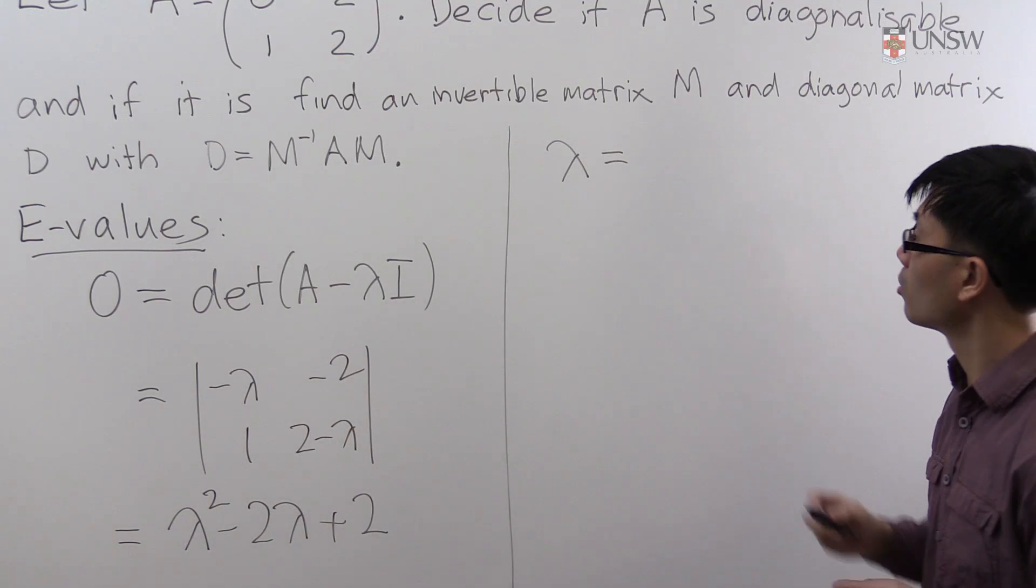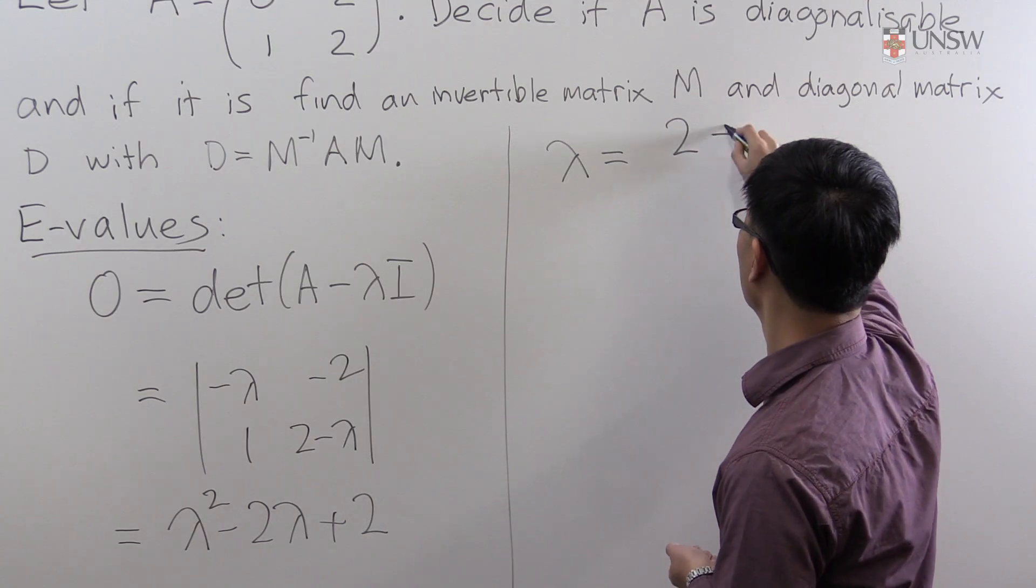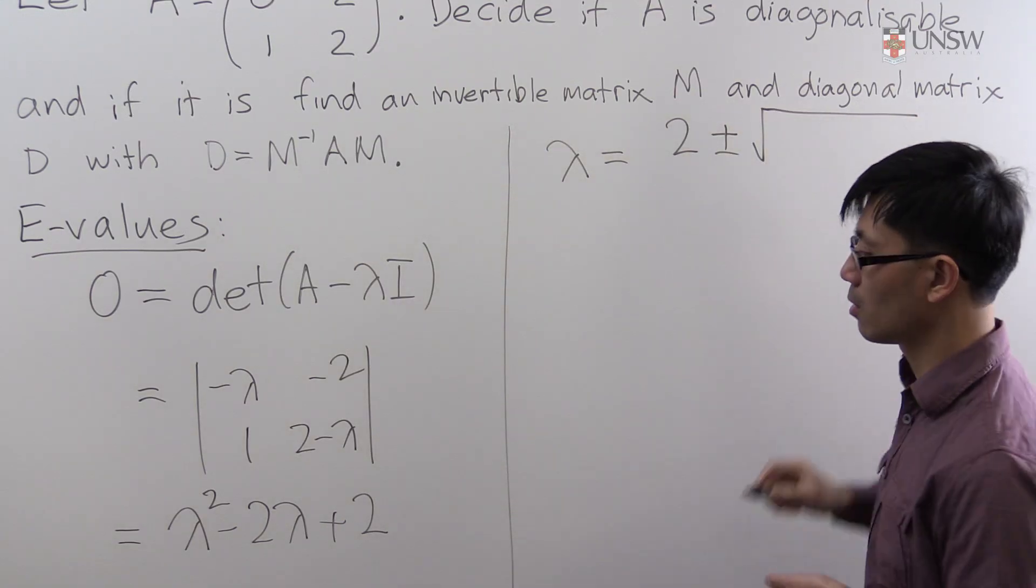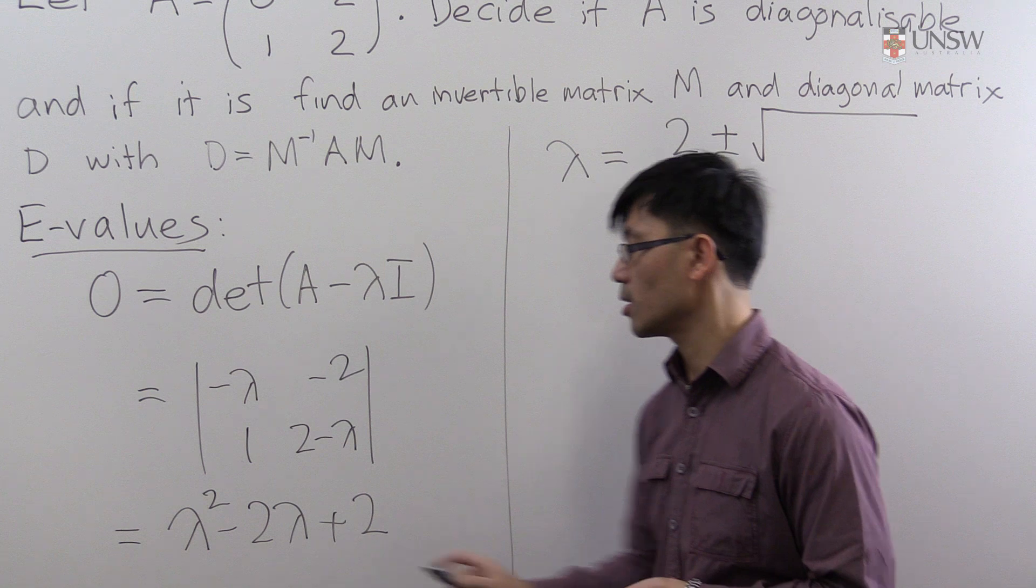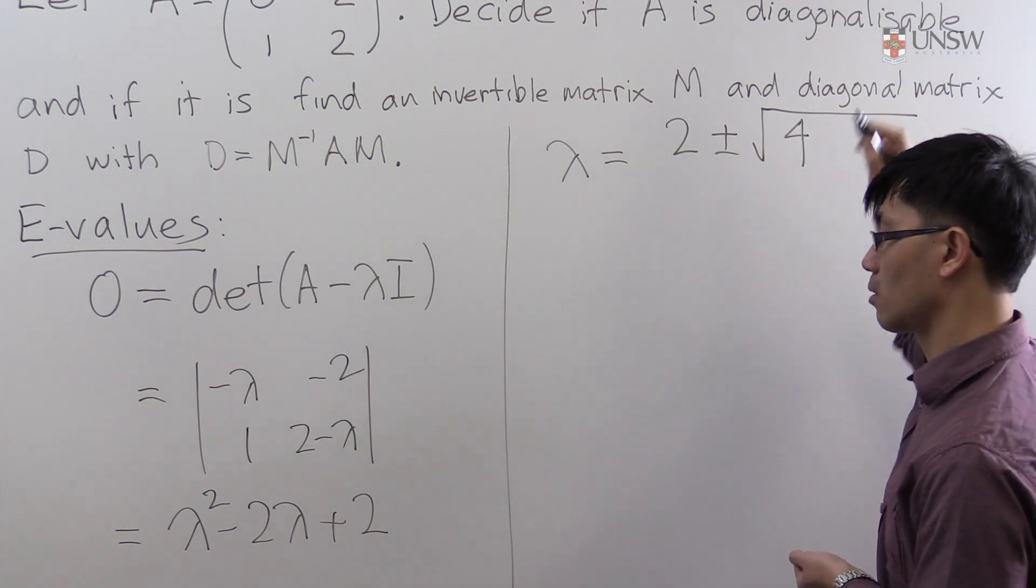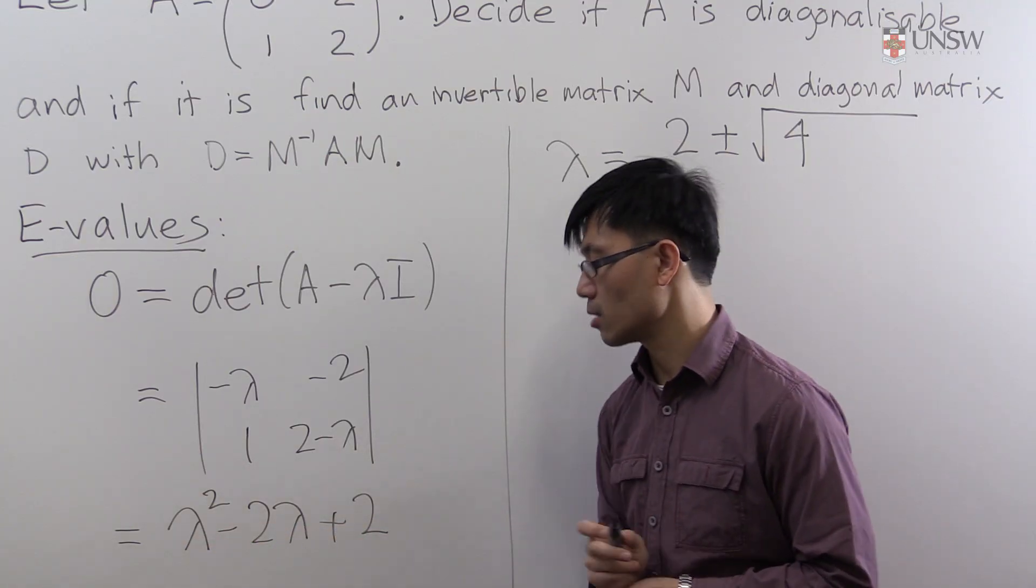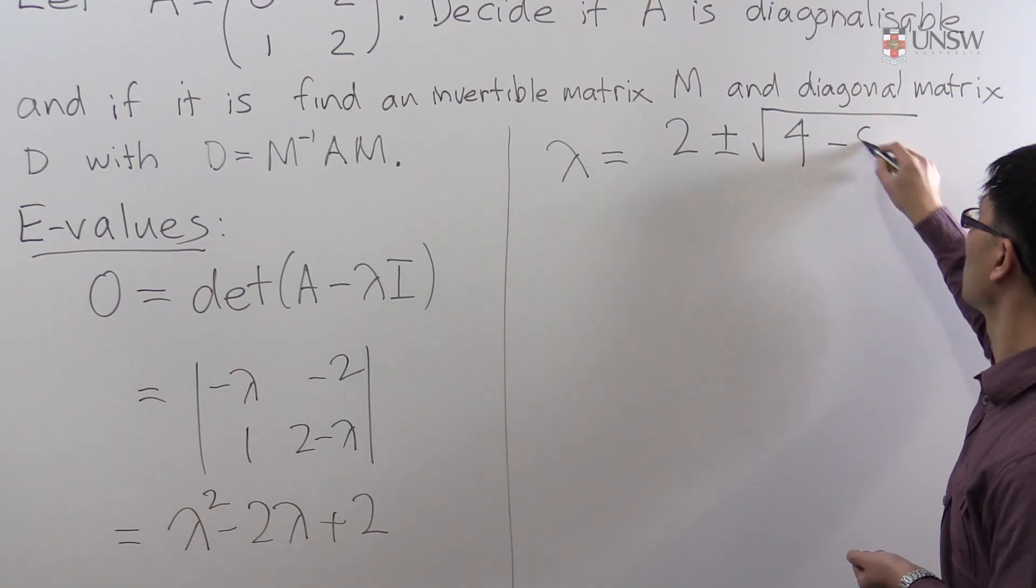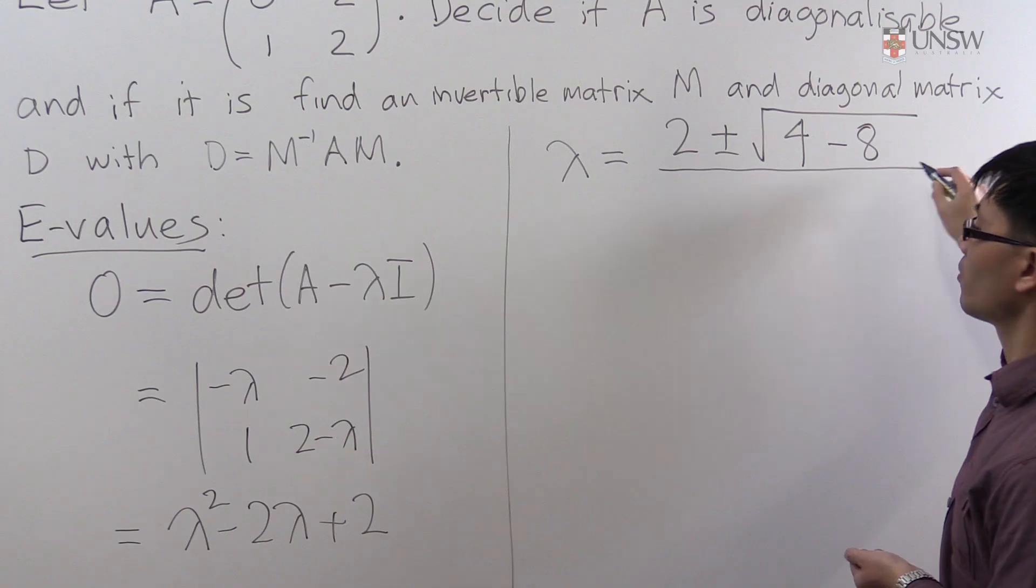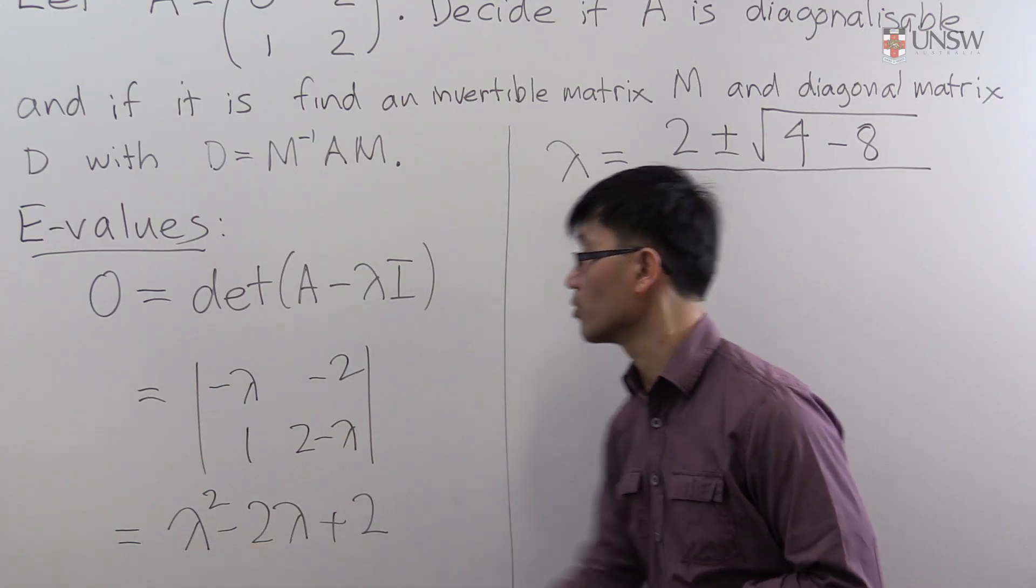That gives us that lambda is equal to 2 plus or minus the square root of 4 minus 4 times the leading coefficient times the constant, 4ac, and we divide all that by twice the leading coefficient.